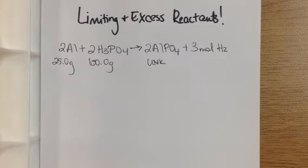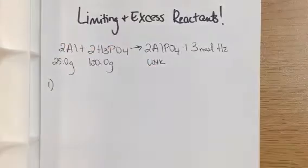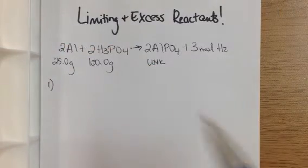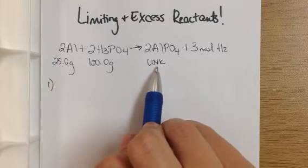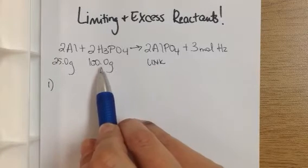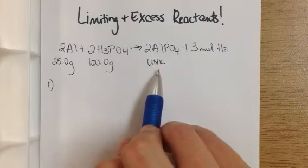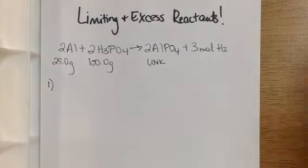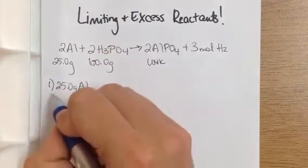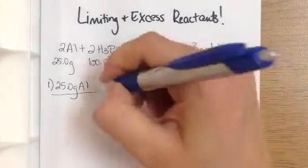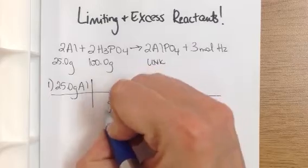So the first question was, what is the limiting reactant? And what you need to do is actually two stoichiometry problems using each of these. So one problem using aluminum going to my unknown, one problem using phosphoric acid going to my unknown. So I'm going to start with aluminum and I had 25 grams of that.